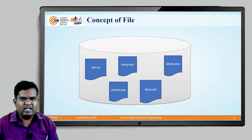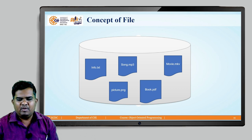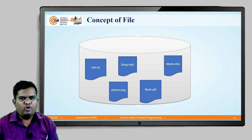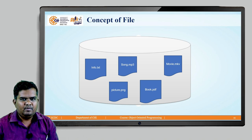A file can be a text file, an audio file, a video file, an image file, a PDF file, or any type of file. It basically represents the logical representation of information storage. Even a Microsoft Word document is also considered a file.